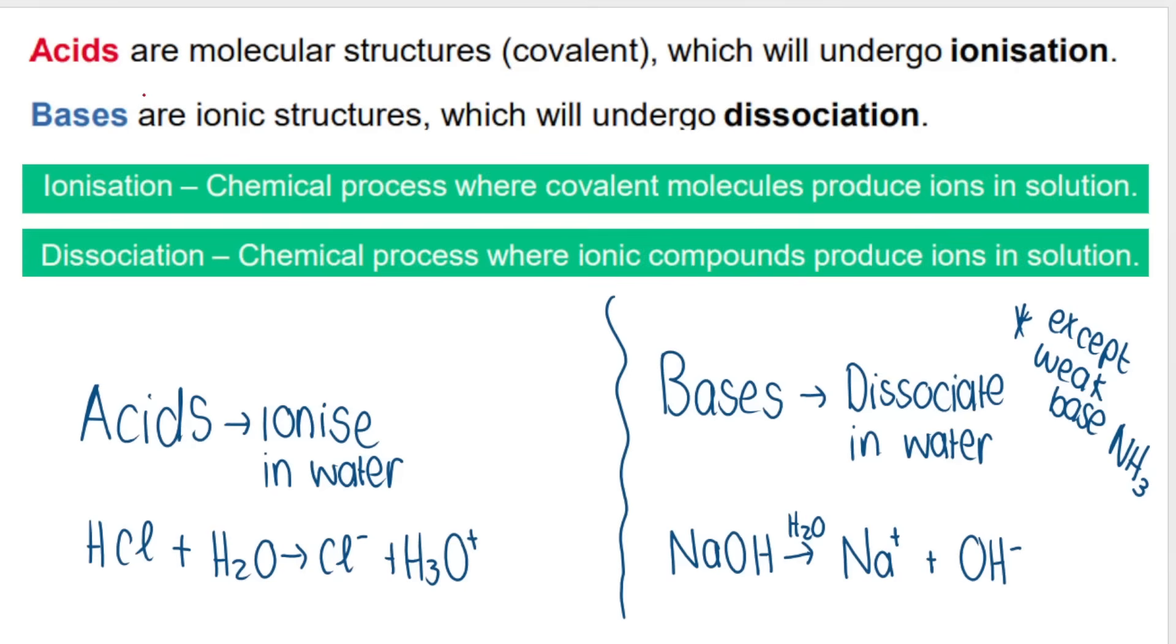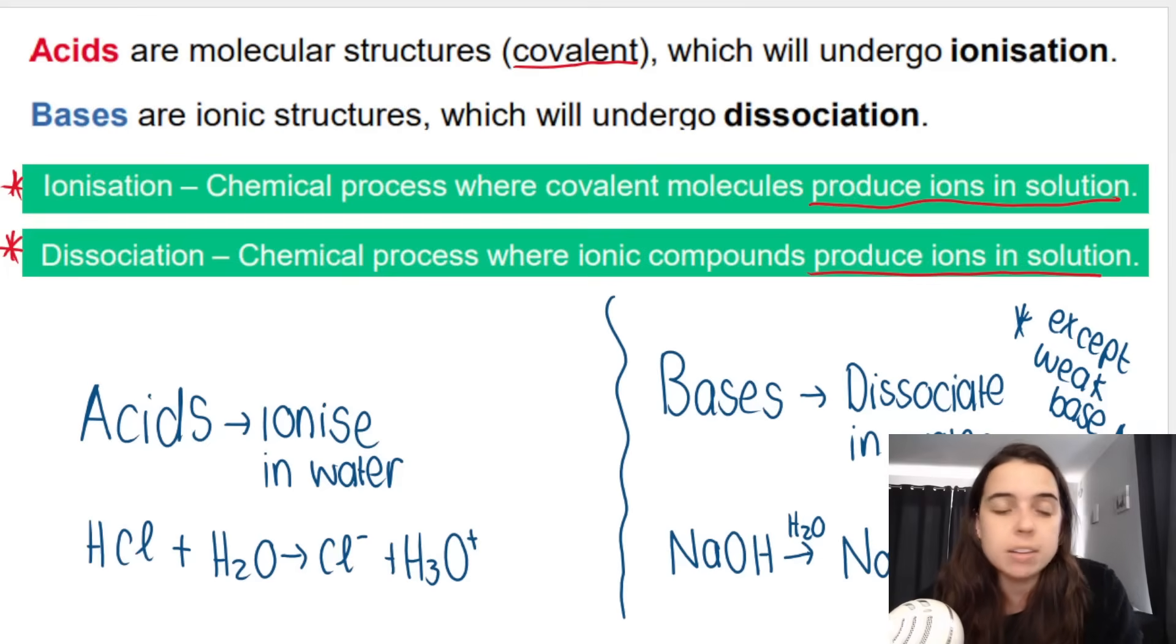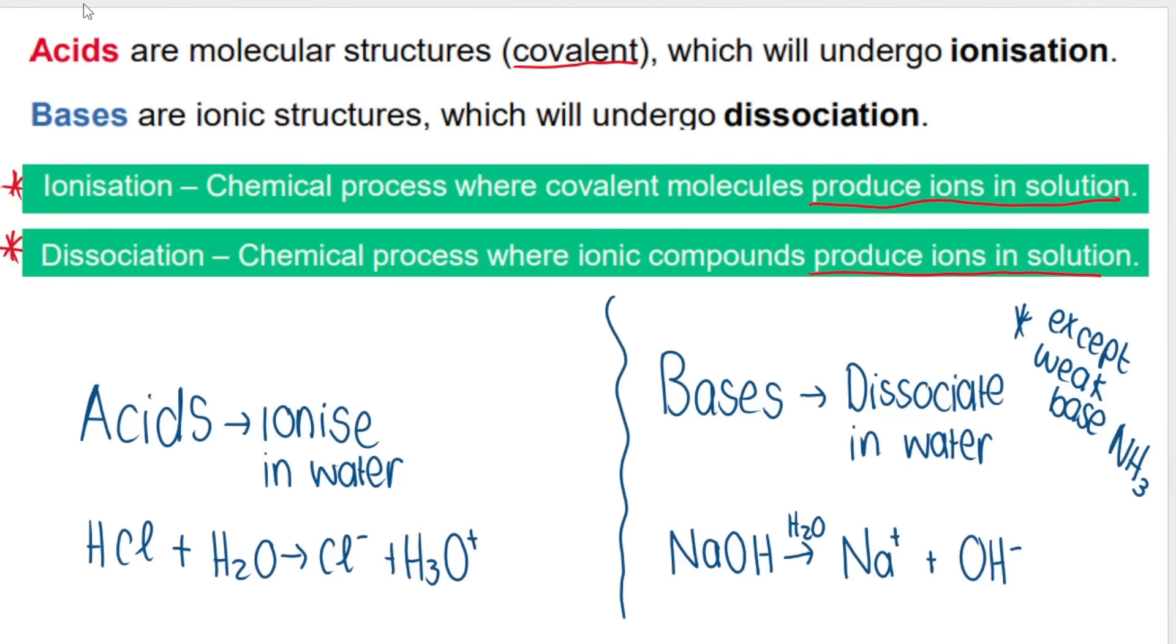Just to elaborate why we say acids ionize and bases dissociate. Very similar. As you can see here, ionization and dissociation are both described as producing ions in solution. But the reason why we say acids ionize is because acids are covalently bonded compounds. I hope you remember from grade 10, covalent compounds involve a non-metal bonding with a non-metal, they share electrons. When we have covalently bonded compounds, we say they ionize in solution or in water. So that means the acid reacts with water. As you can see here, water is one of the reactants, it's part of the chemical equation. Water is included here as a reactant.